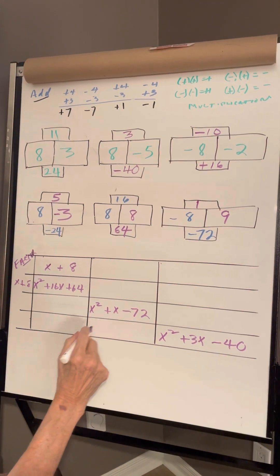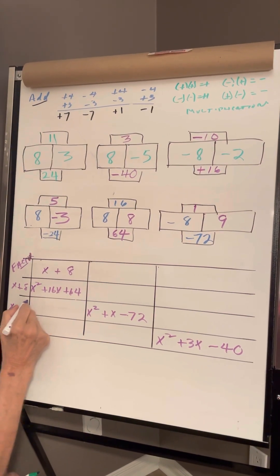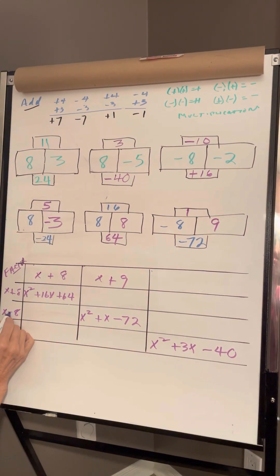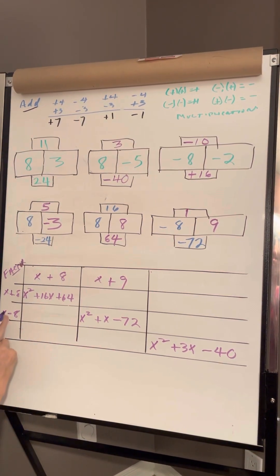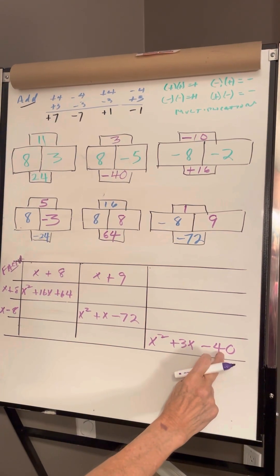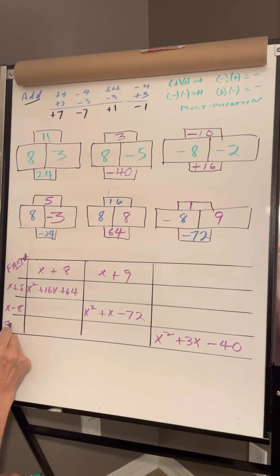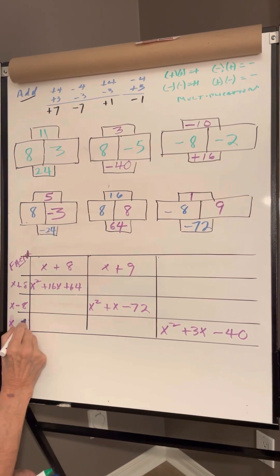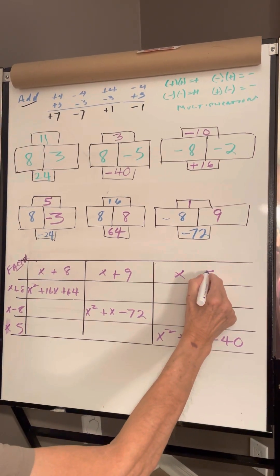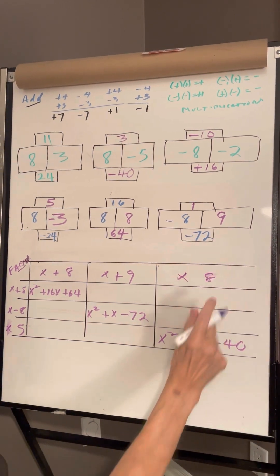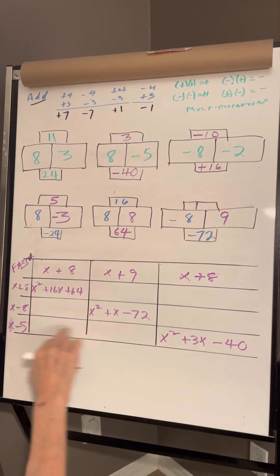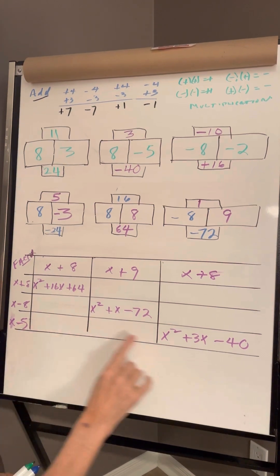9 times 8 is 72. 9 times 8 — it's a plus, that's plus. This is minus. That makes it positive 1. And if C1 negative and multiplying, keep it. 40. 8 times 5. 8. 8 times 5. This is going to be 8. Positive, positive, negative. So plus 8 minus 5 is positive 3. C1 negative, keep it.